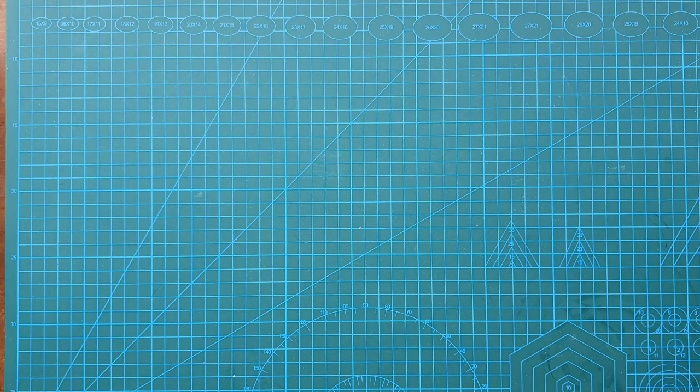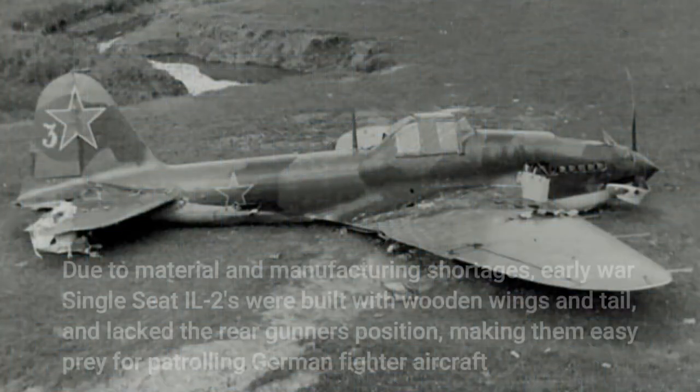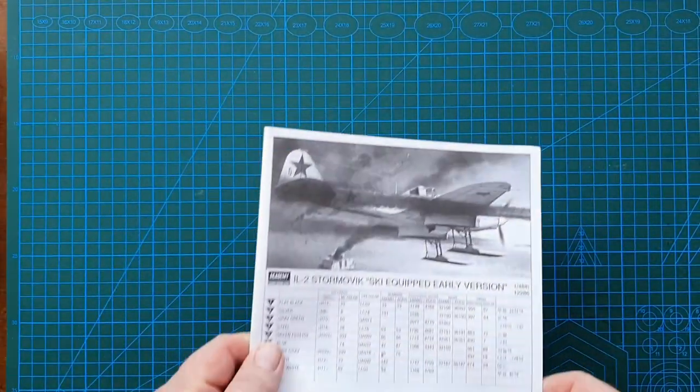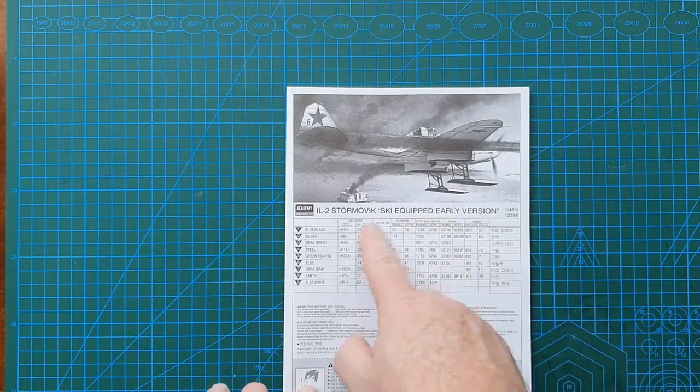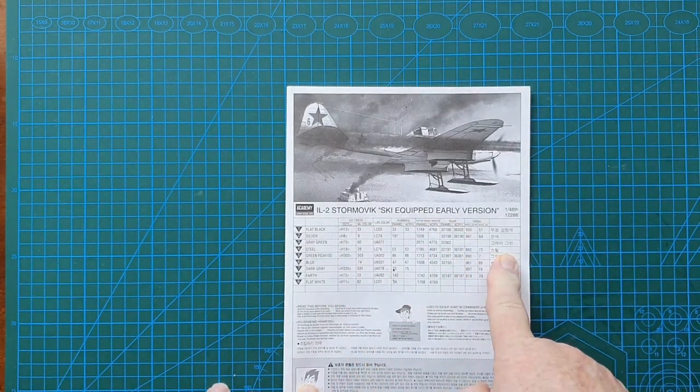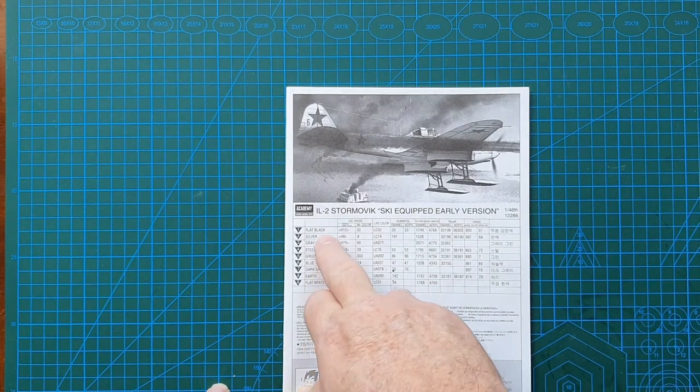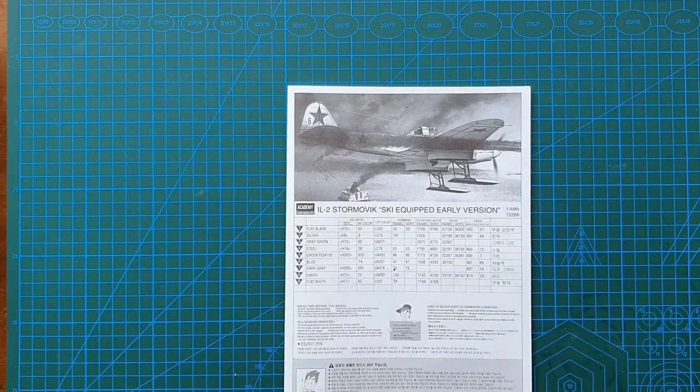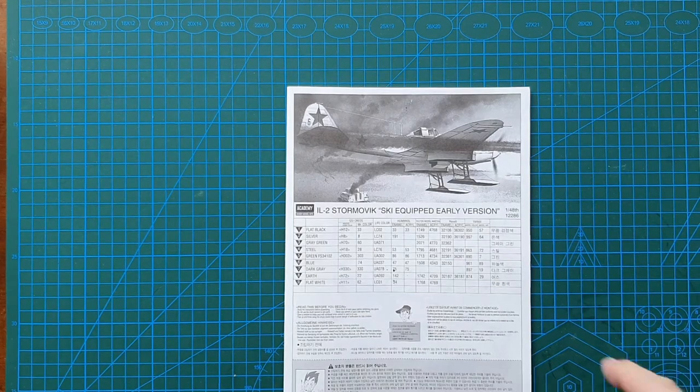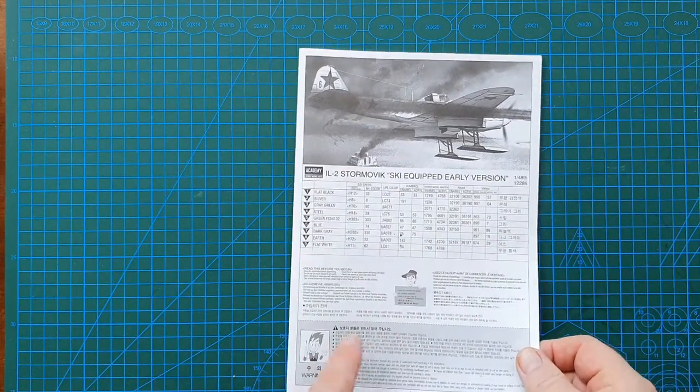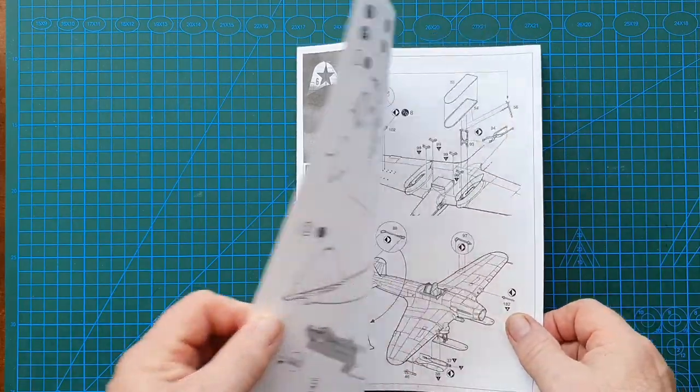Let's have a look at the instructions. Color callouts—two, four, six, eight, nine color callouts, so that's pretty easy. A variety of manufacturers, even better. Usual warnings.